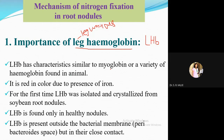LHb has characteristics similar to myoglobin, a variety of hemoglobin found in animals. Just as hemoglobin in our body is an oxygen carrier — when hemoglobin is less we suffer breathlessness — in plants also this hemoglobin plays a very important role: it catches the oxygen present within the cell.